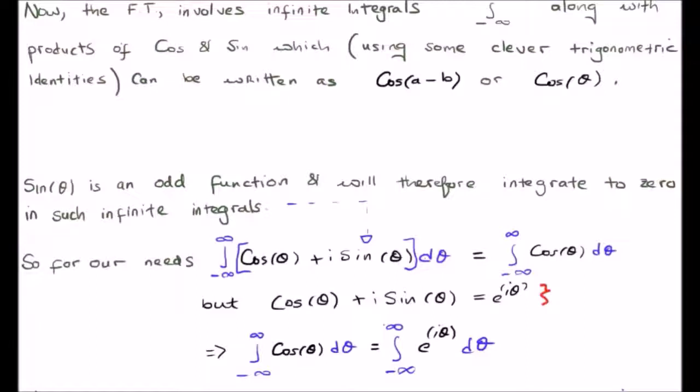So, as I said, e to the i theta is equal to cos theta plus i times the sine of theta. This means that inside the Fourier transform integrals, we can go from having a single cosine or integrating our cosine to integrating e to the i theta.